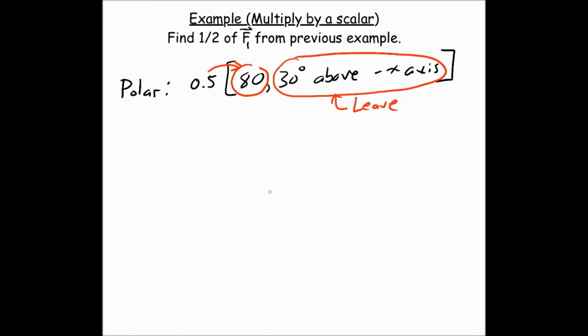So that gives us a result. And then the same angle. So that's how we do it in polar form. So now let's repeat this in Cartesian form.